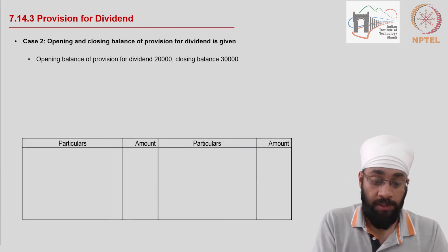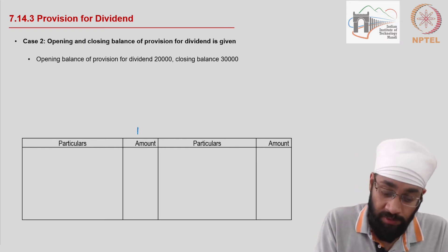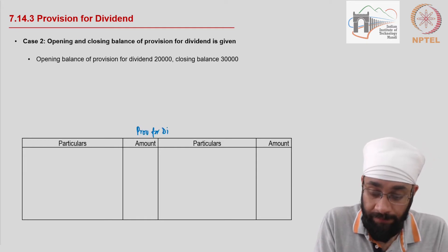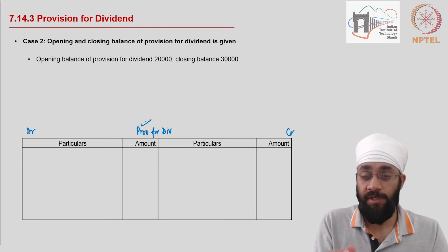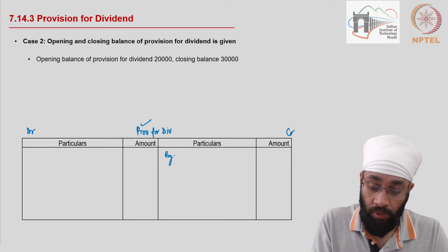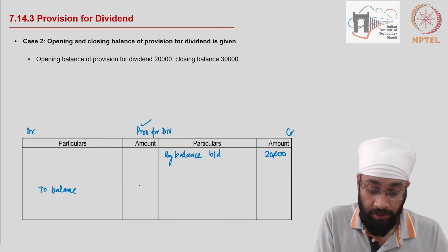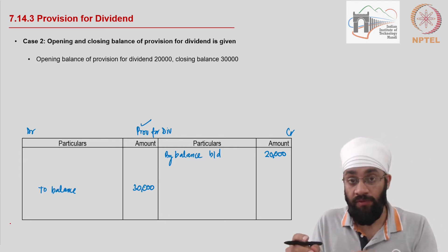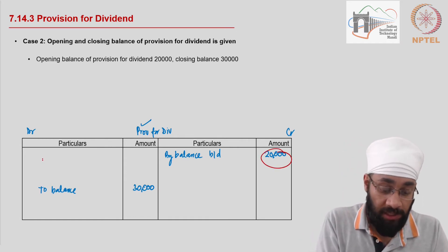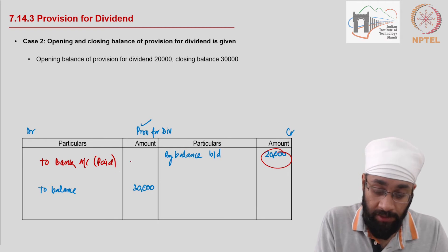Case two is more complicated — you have an opening and closing balance of the provision for dividend. This is treated very similarly to the provision for tax: credit and debit. Since this is a provision and a liabilities account, we write the opening balance on the credit side. By balance brought down, the opening balance is 20,000 and the closing balance is 30,000. The opening balance is the amount of dividend actually being paid — 20,000.